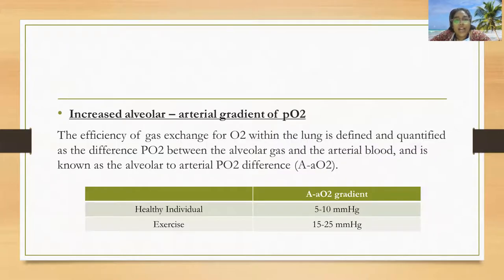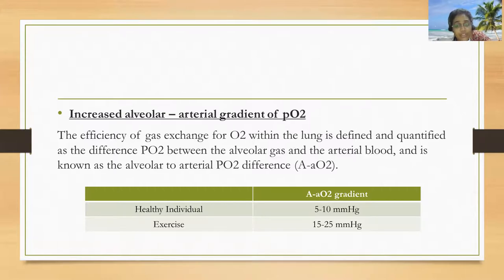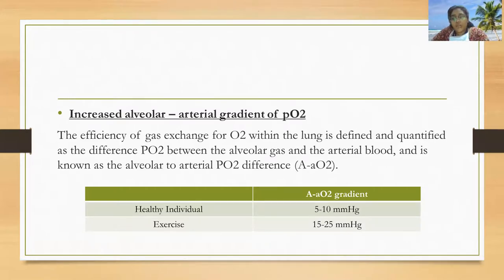Next is increased alveolar-arterial gradient of PO2. The efficiency of gas exchange for oxygen within the lung is defined as the difference of PO2 between the alveolar gas and the arterial blood, known as the alveolar-to-arterial PO2 difference. In a healthy individual, the normal alveolar-arterial gradient of PO2 is 5–10 mmHg, while during exercises it goes up to 15–25 mmHg.